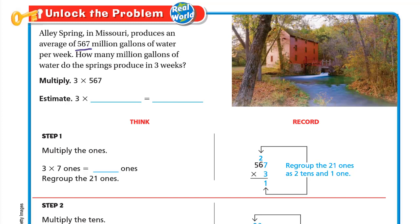Alice Spring in Missouri produces an average of 567 million gallons of water per week. How many millions of gallons of water do the springs produce in three weeks? So in one week it's 567 million gallons, so in three weeks we will multiply 3 by 567. First, let's estimate.